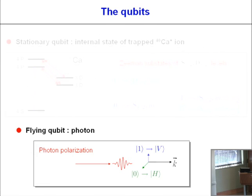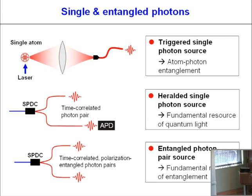About the photons: we use different types. Either we get single photons from an ion — a triggered single photon source — and if done right, this even gives atom-photon entanglement. We also use an SPDC source for photon pairs; putting one photon on an APD heralds the presence of the other, giving a single photon source. We can also use the polarization-entangled photon pairs as a fundamental resource of entanglement.